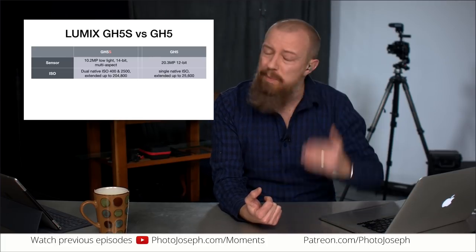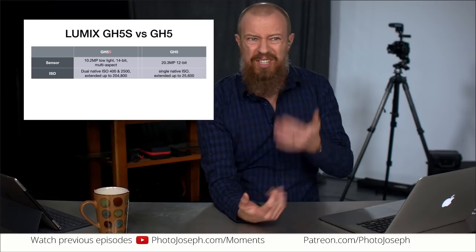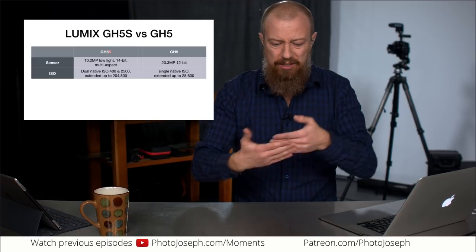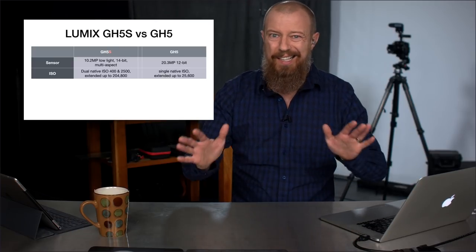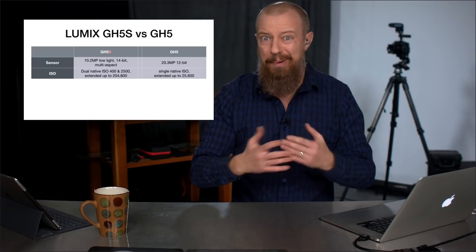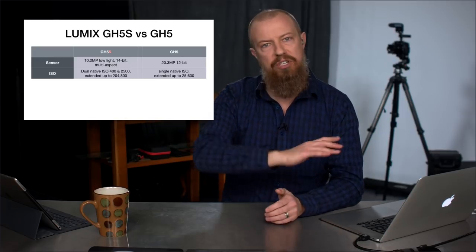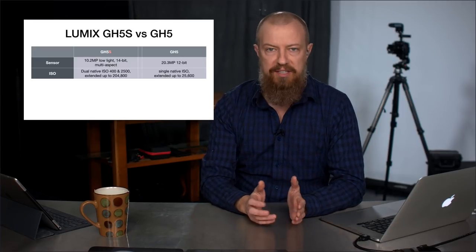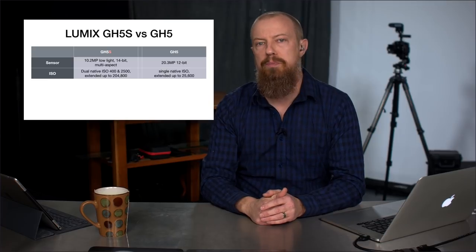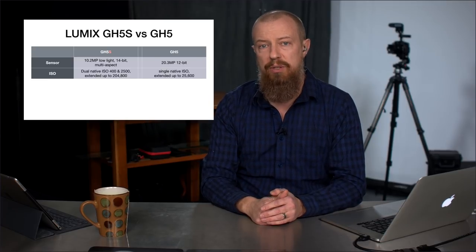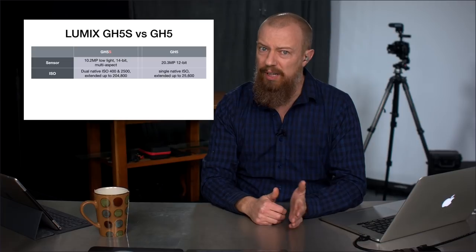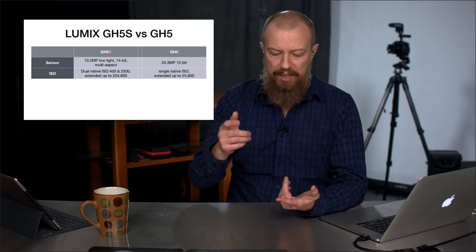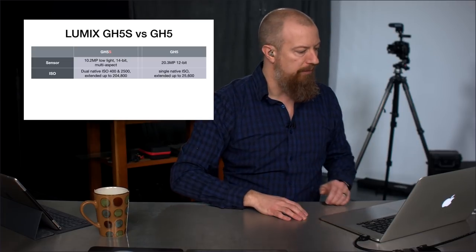I have absolutely no idea how that actually works, because it's not two sensors — it's not swapping in a different sensor. I don't know how it works, but it does. Dual native ISO isn't new to sensors in general; it's new to the Lumix cameras. This kind of tech has previously existed so it's not some crazy new thing, but it's awesome that it's here. If you're shooting low light, this is the camera to have.